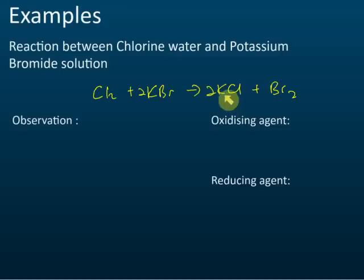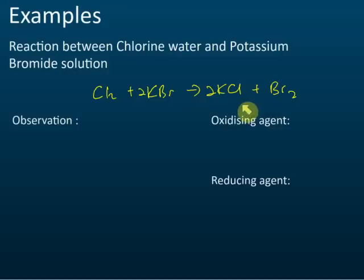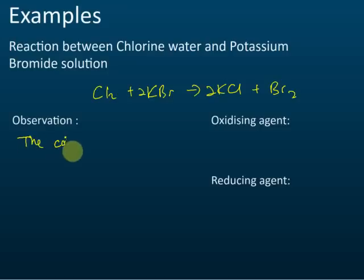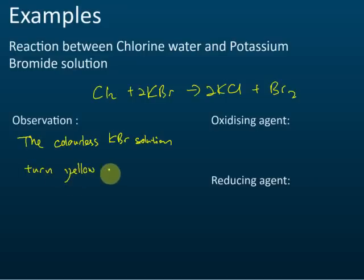When bromine dissolves into the water it forms a brownish, orange, or yellowish solution. Since chlorine is a gas and the others are solutions, you will observe that the colorless potassium bromide solution turns yellow or brown, depending on the concentration.